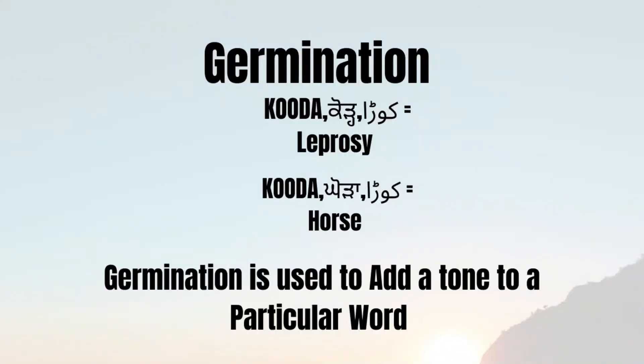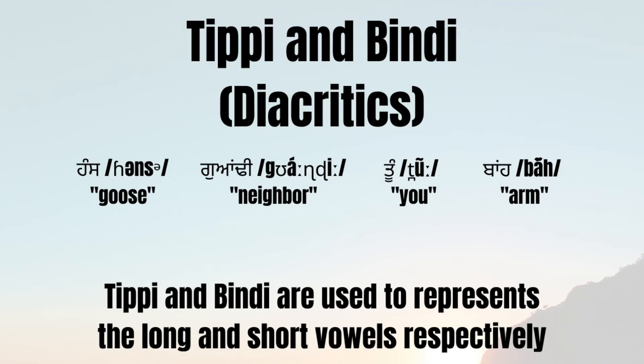Gemination is used to elongate the sound of a particular word. For example, the word 'koda' means ugly or that a person has some sort of disease, but when gemination is applied — 'kodda' — the meaning changes completely, and it means horse.